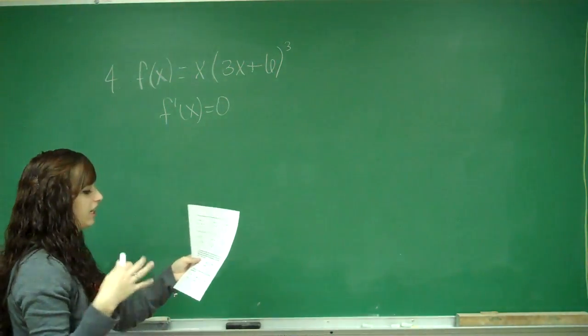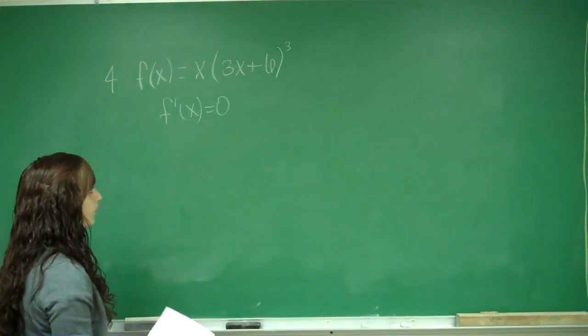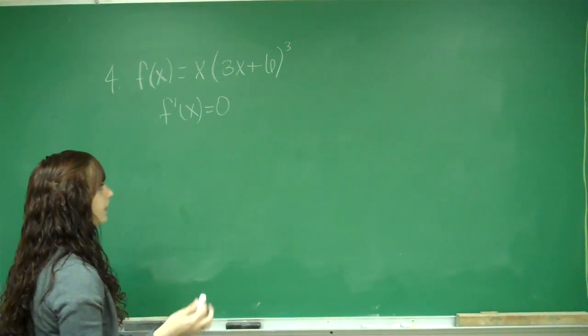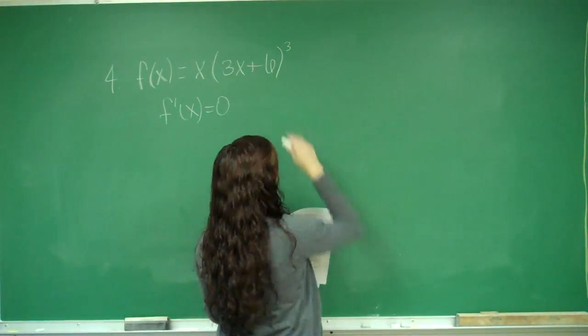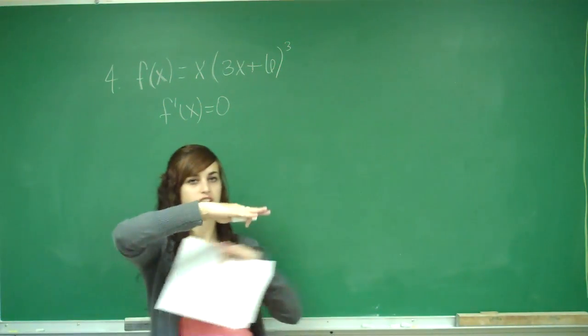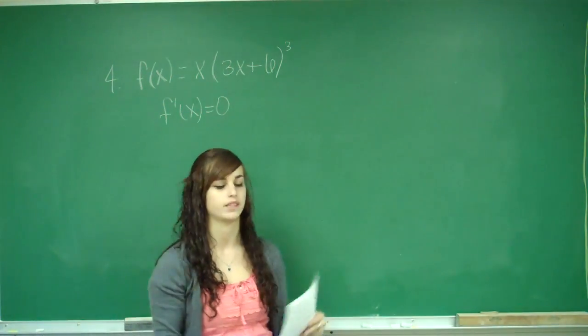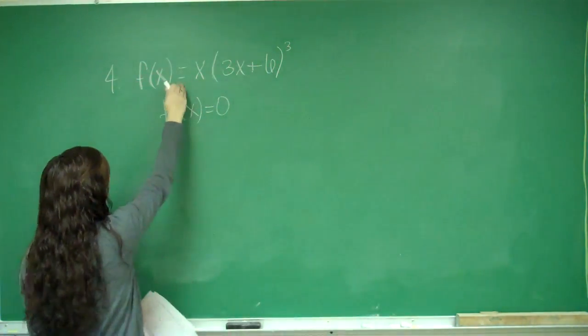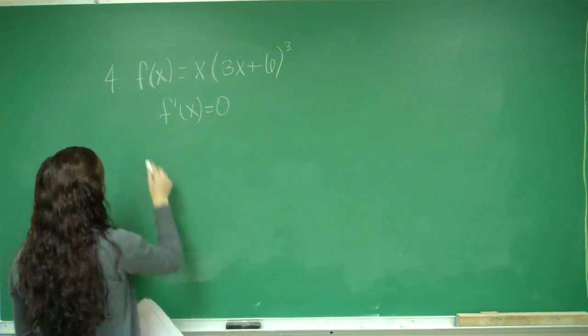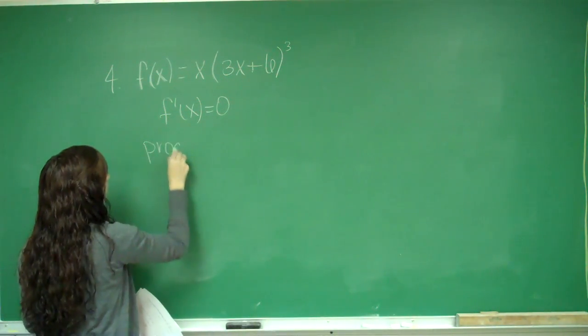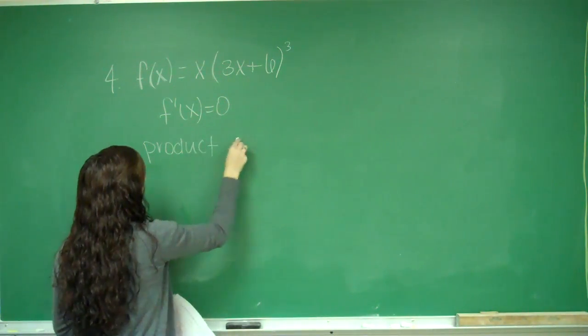Because they want to know at which value of x the graph has a horizontal tangent line. Because remember that the derivative gives me the slope. In a horizontal tangent line, the slope is going to be 0. So to find the derivative of this, I have to use product rule and chain rule.